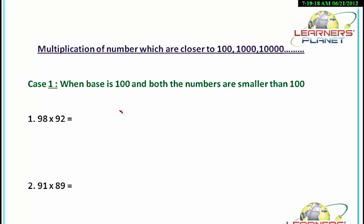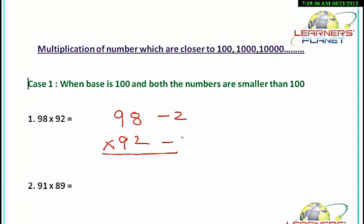We have to multiply 98 into 92. Now, 98 is 2 less than 100, and 92 is 8 less than 100. We are just finding out the difference of the given number from 100. Now we just have to multiply these two numbers: 2 into 8 gives us 16.